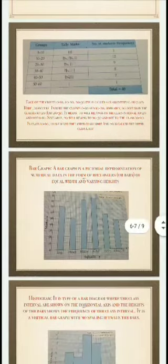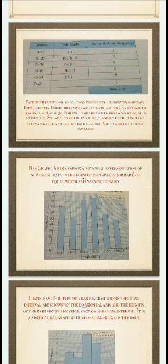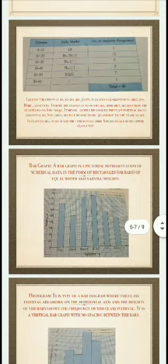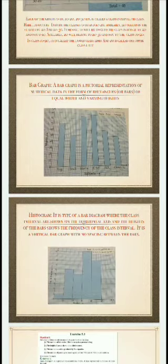Now, how to represent data in a pictorial form. First is the bar graph. A bar graph is a pictorial representation of numerical data in the form of rectangles of equal breadth and varying height. You have already studied how to make a bar graph in lower classes. Next is how to make a histogram. A histogram is also a type of bar graph where class intervals are shown on the horizontal axis and the heights of the bars show the frequency of the class interval. It is a vertical bar graph with no spacing between the bars.